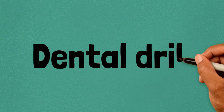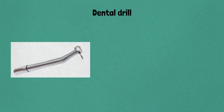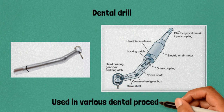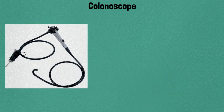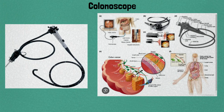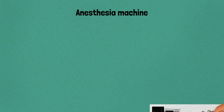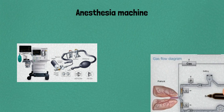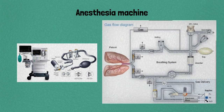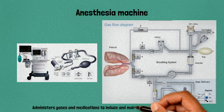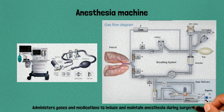Thirty-four: dental drill, used in various dental procedures. Thirty-five: colonoscope, examines the colon for abnormalities. Thirty-six: anesthesia machine, administers gases and medications to induce and maintain anesthesia during surgery.